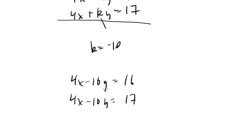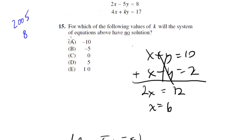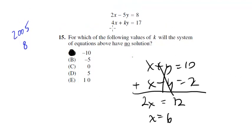Because once k is negative 10, we get 4x minus 10y equals 16 and 4x minus 10y equals 17. That doesn't make sense — there's no way that the same thing can equal 16 and equal 17. That's just against the rules of algebra, of logic, and of existence. So this system would have no solution — an empty set. So k is going to have to equal negative 10. This one's a very strange problem; I don't think you'll see anything like this again on an SAT. But it tests your understanding of how multiple equations and multiple unknowns work.